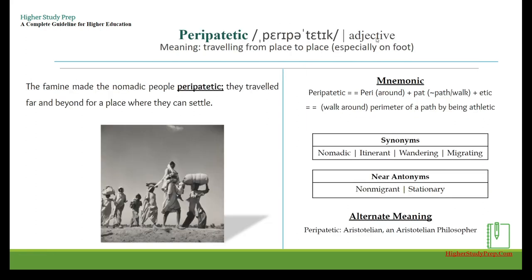Peripatetic — it's an adjective which means traveling from place to place, especially on foot. For example, the famine made the nomadic people peripatetic; they traveled far and beyond for a place where they could settle. The mnemonic: break it apart — 'peri' means around, and 'pad' can be thought of as path or walk, plus 'atic.'